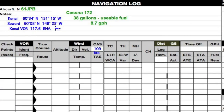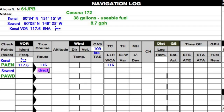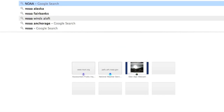We've zoomed in on our nav log. We've already filled in Kenai to Seward and the VOR. Now we have something new: we've got our true course. We figured that out, and we're going to say 'direct' because we're flying directly from Kenai to Seward. So this is my true course — 116 — which also goes in the heading column. We also selected our altitude: 7,500 feet. Let's check on the weather.